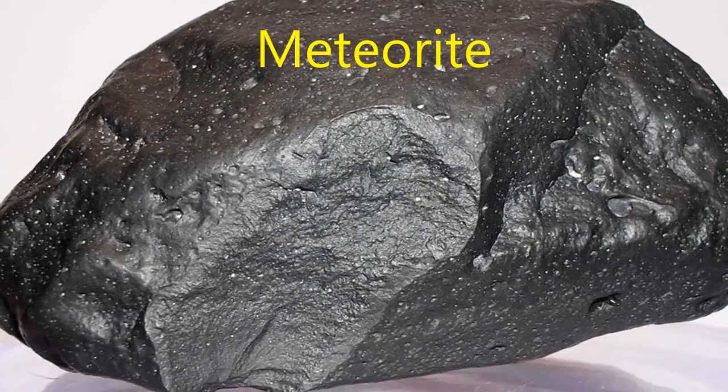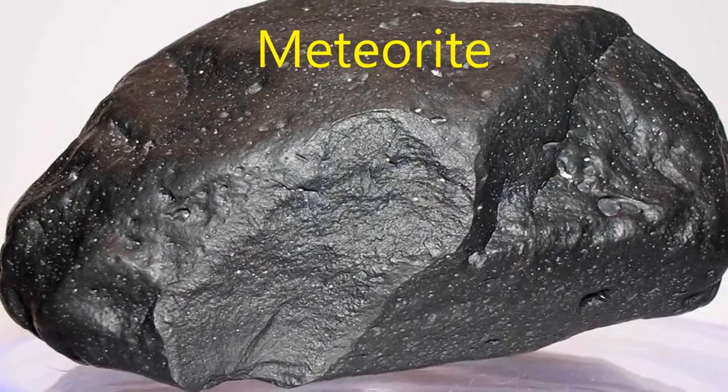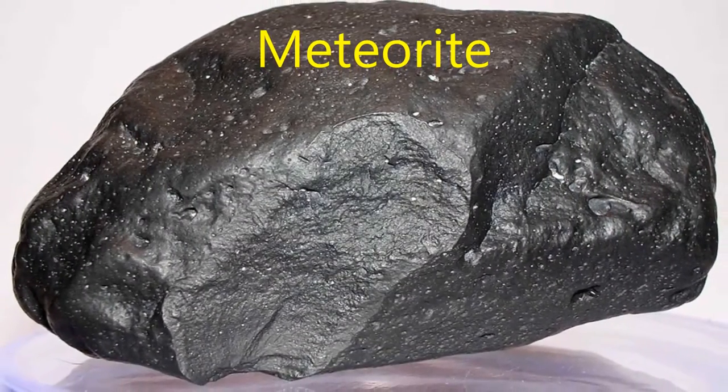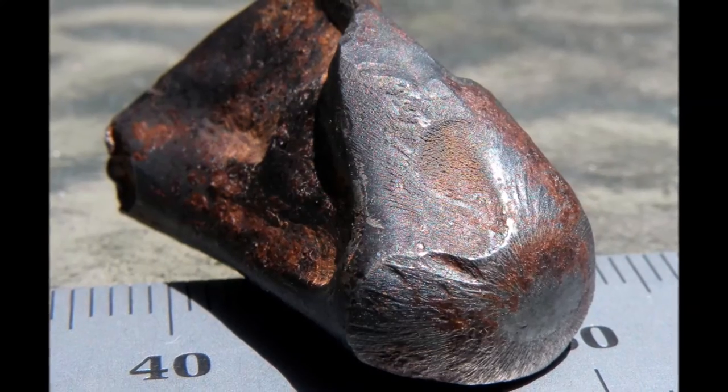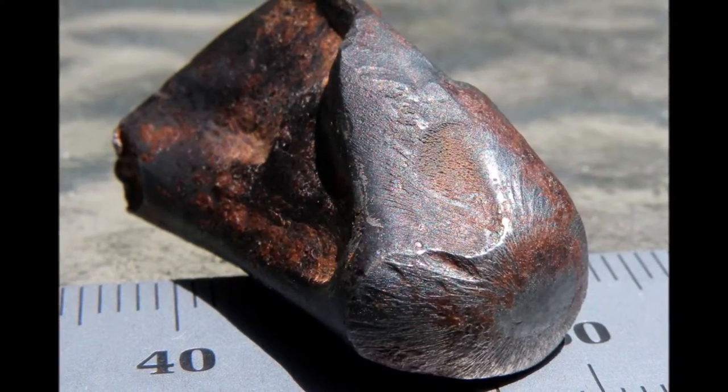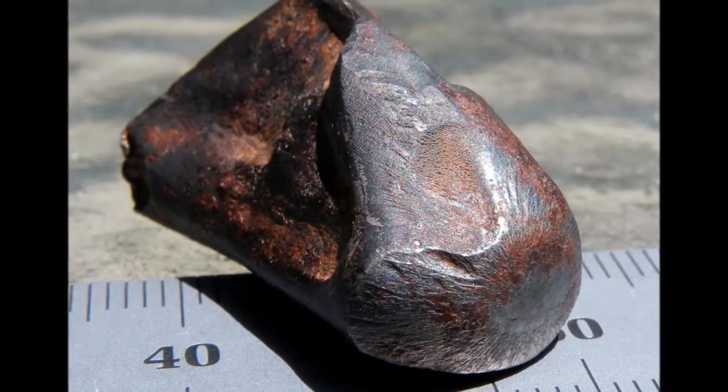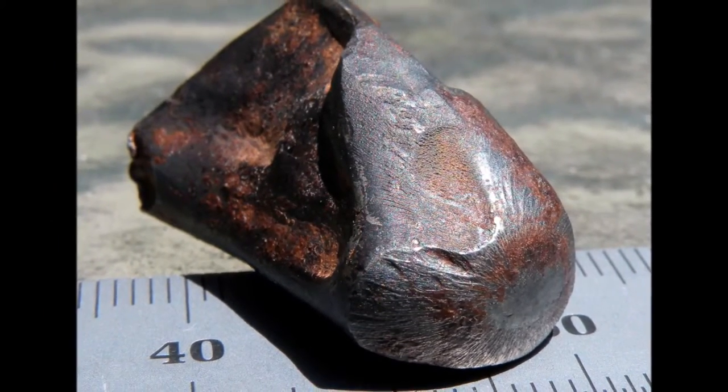If that meteor manages to hit Earth, then it is called a meteorite. Since meteors are usually composed of metal, you can find them using a metal detector.